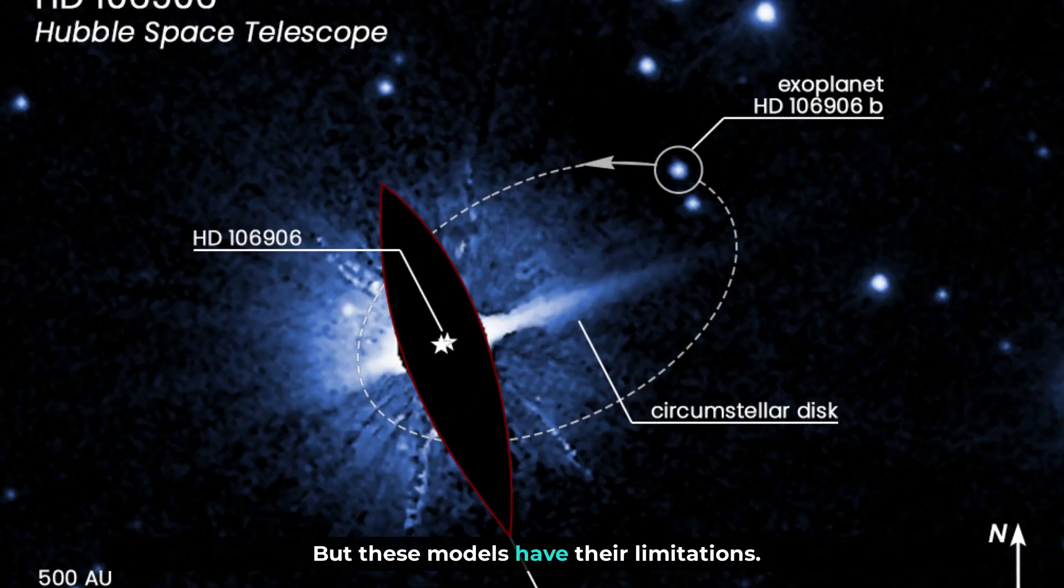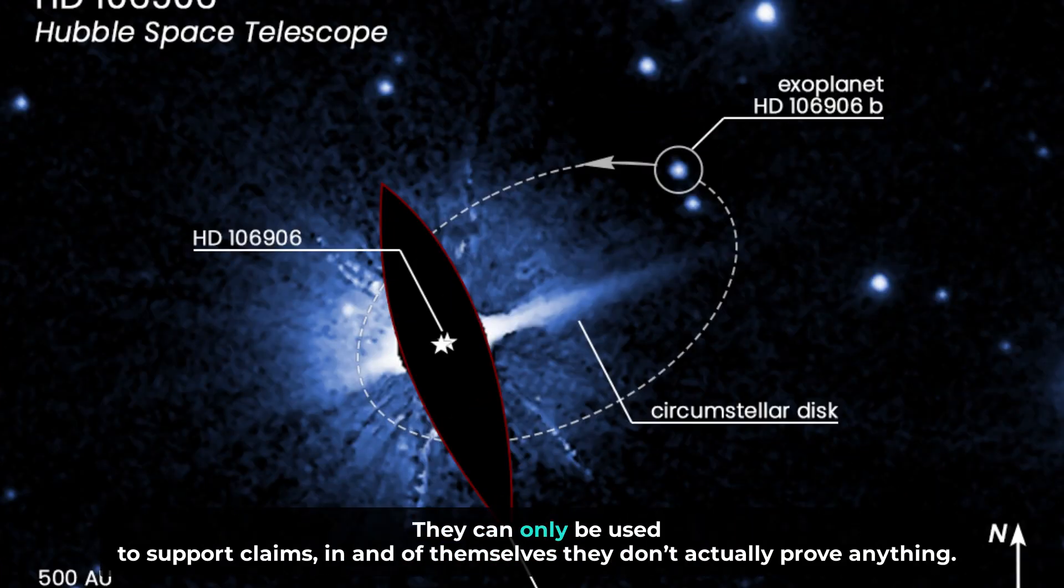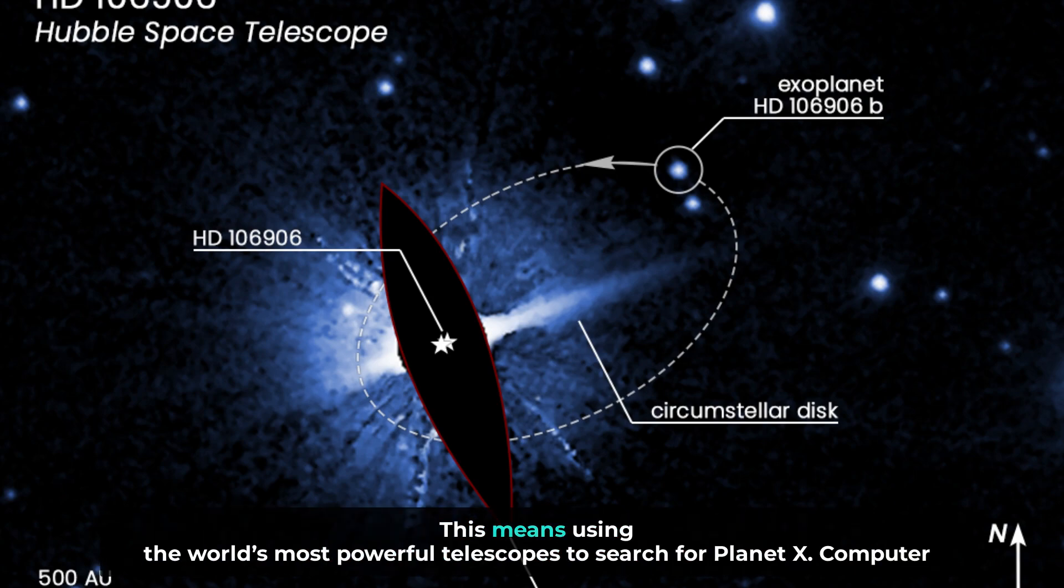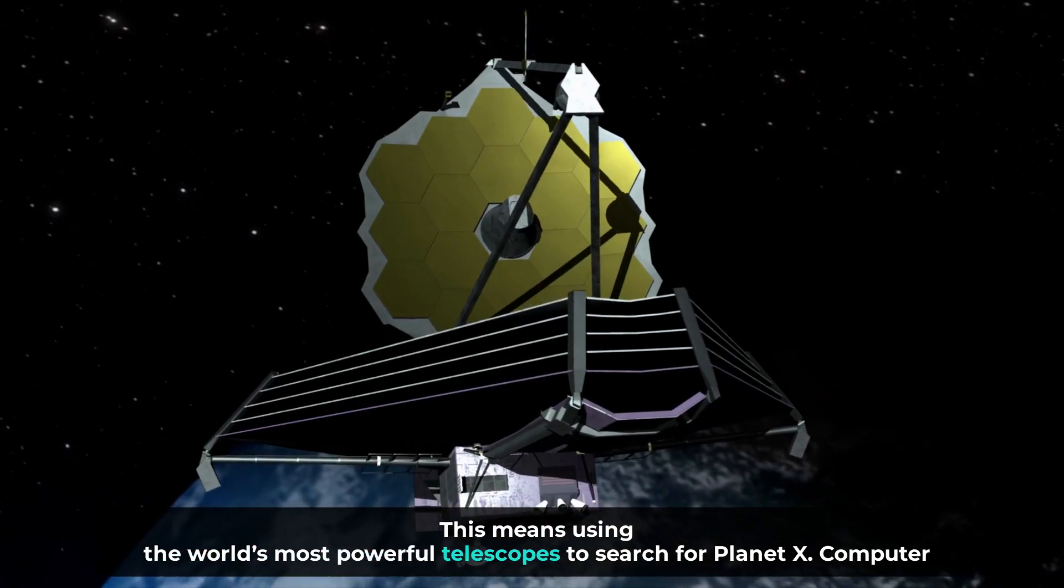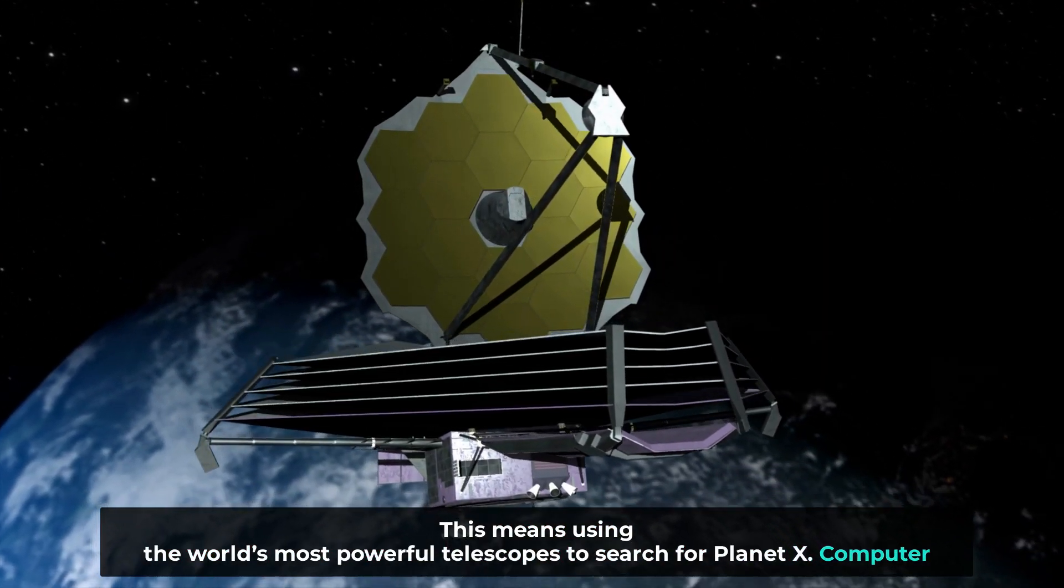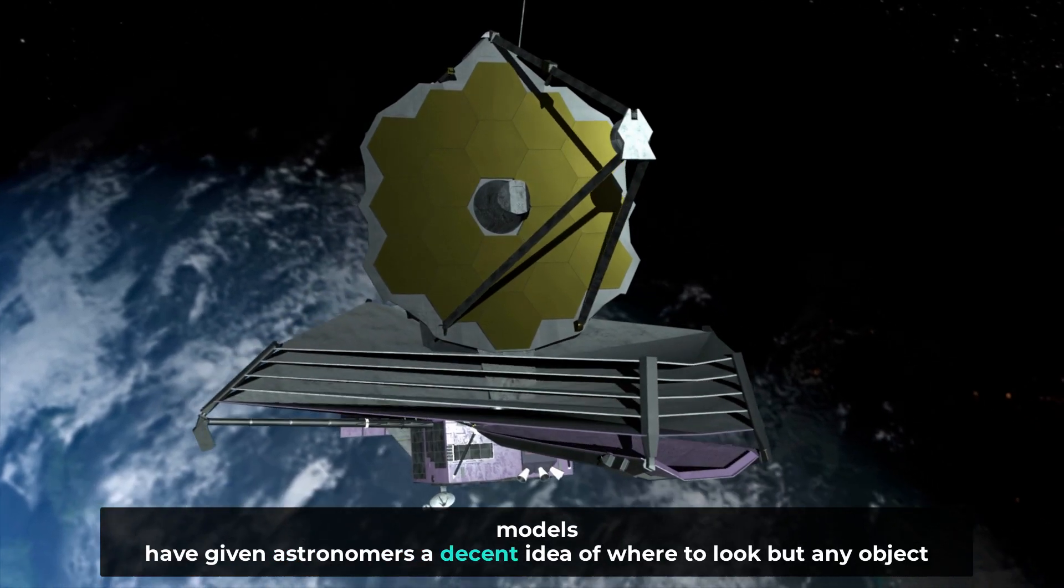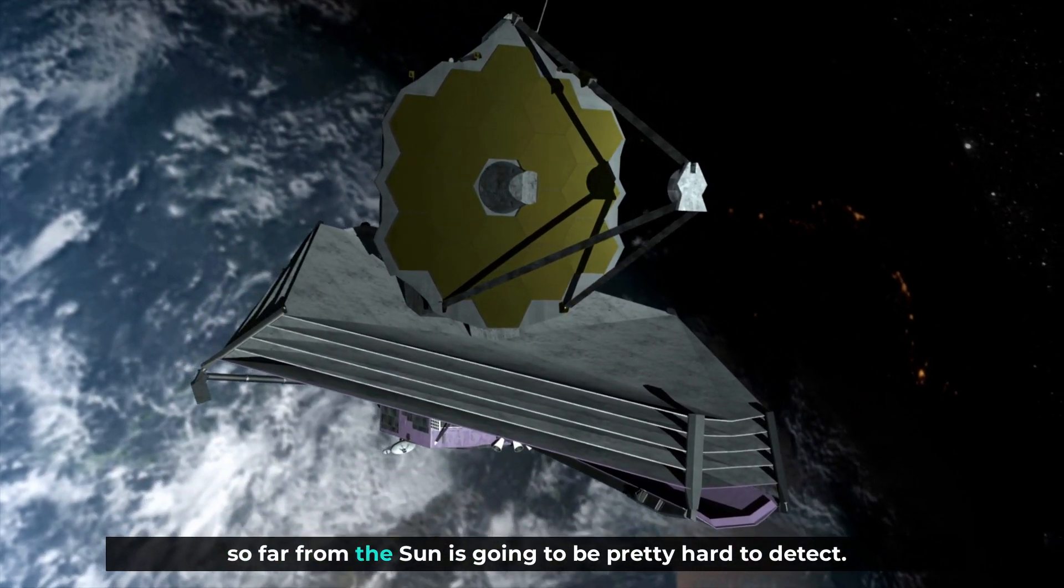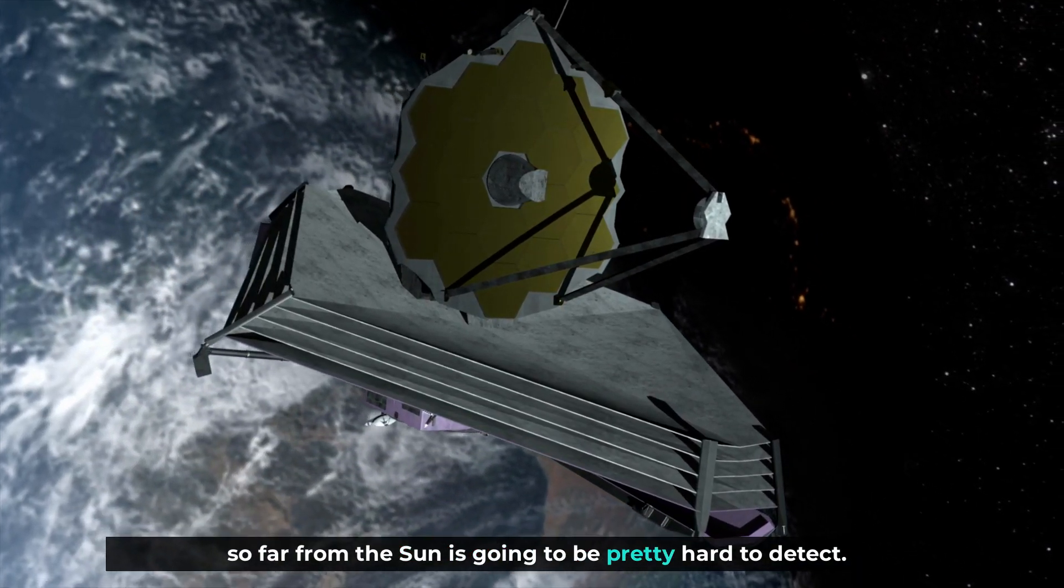But these models have their limitations. They can only be used to support claims, and in of themselves, they don't actually prove anything. For Planet X to be established as fact, we'll need hard evidence. This means using the world's most powerful telescopes to search for Planet X. Computer models have given astronomers a decent idea of where to look, but any object so far from the sun is going to be pretty hard to detect.